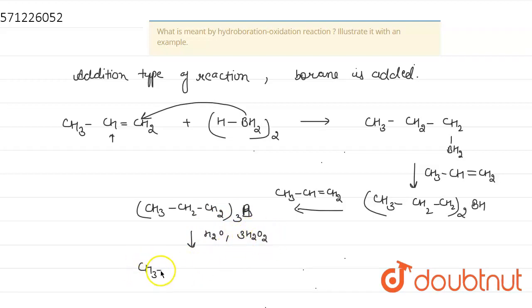Thus, formation of CH3-CH2-CH2-OH plus B(OH)3 occurs. So, by this process, we can convert a propene molecule to propan-1-ol.